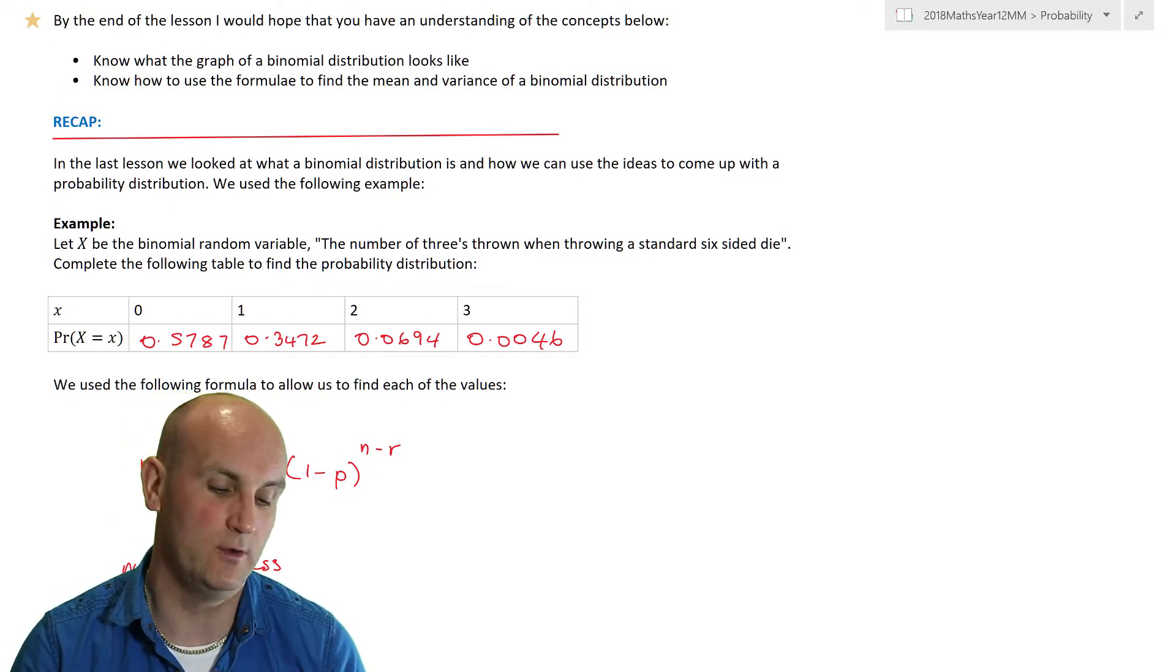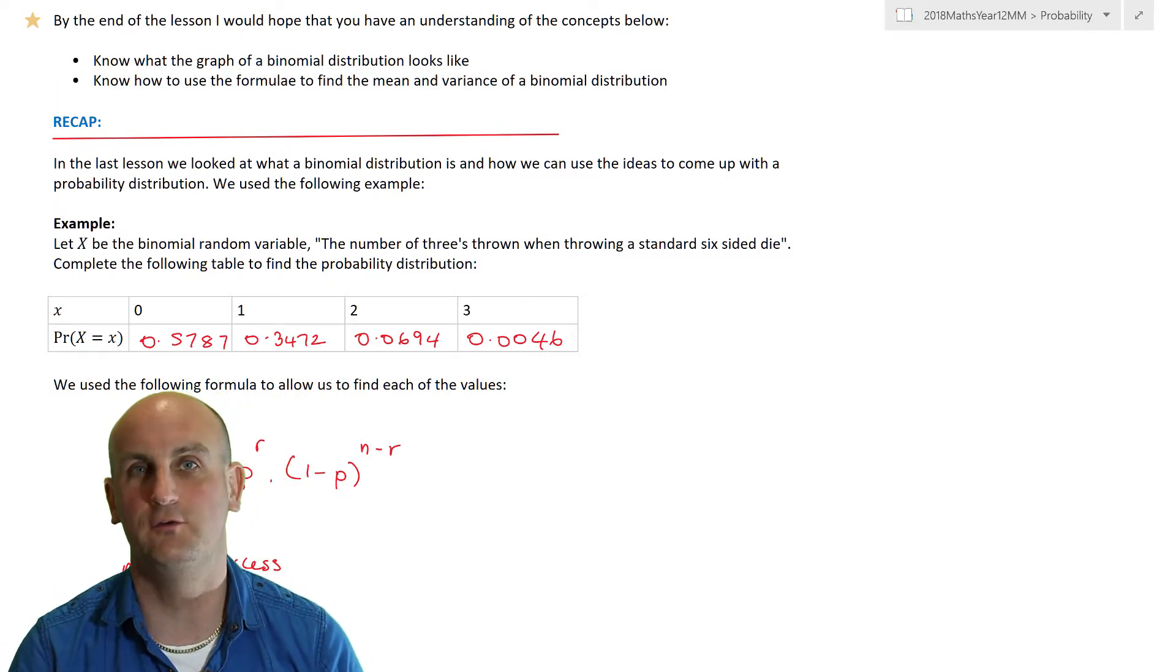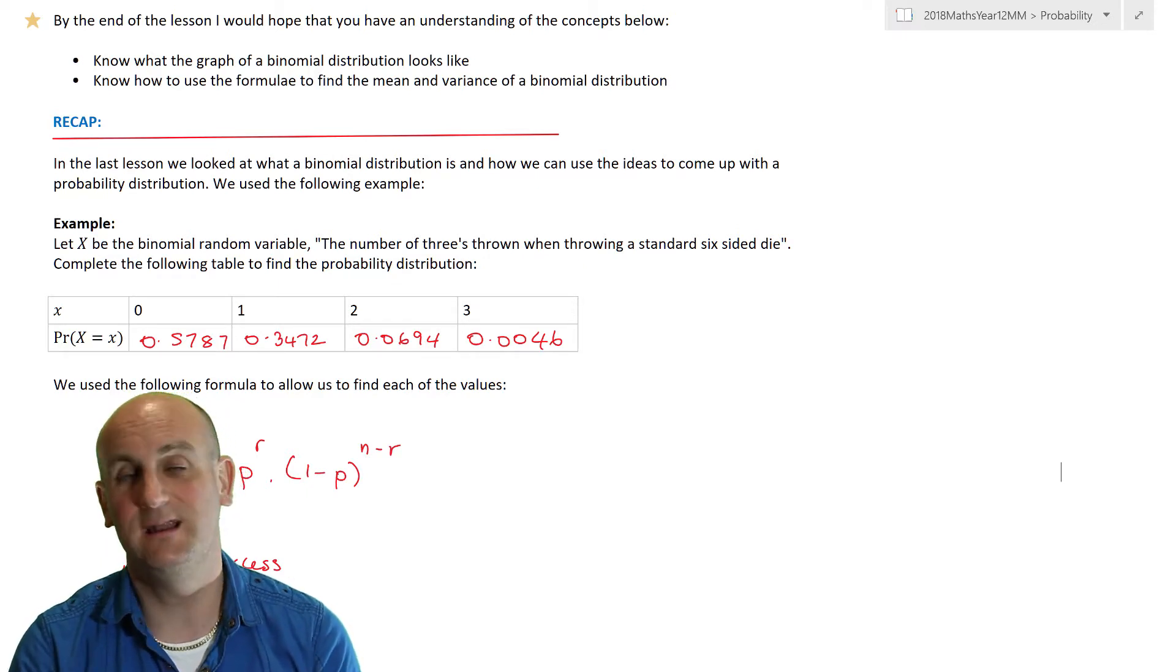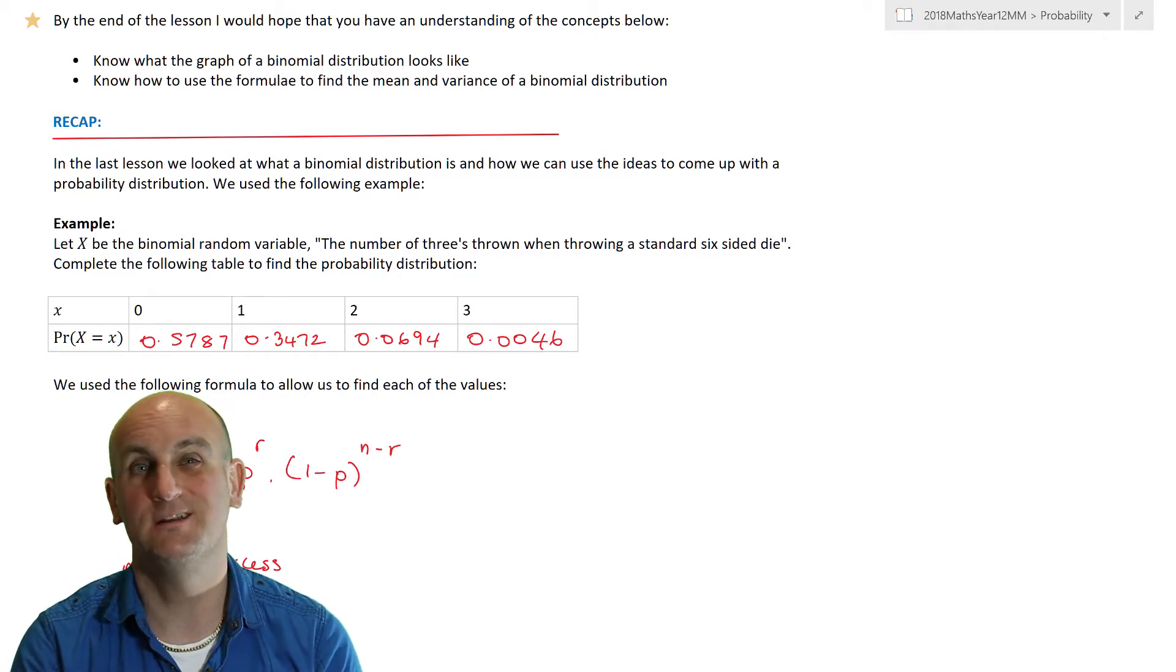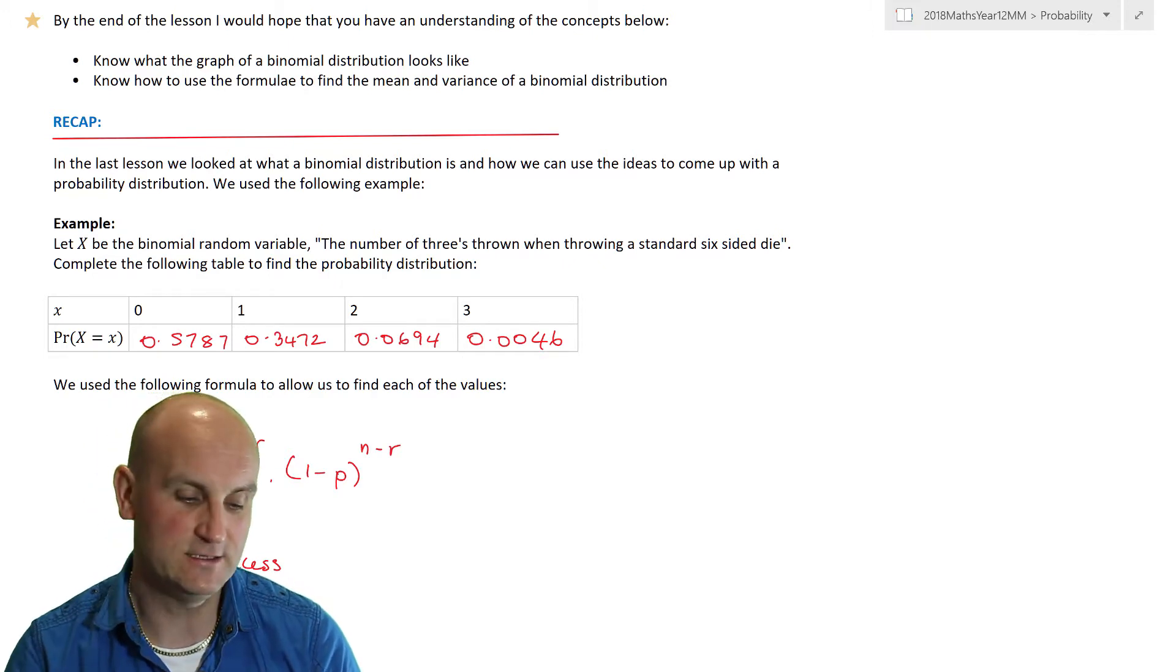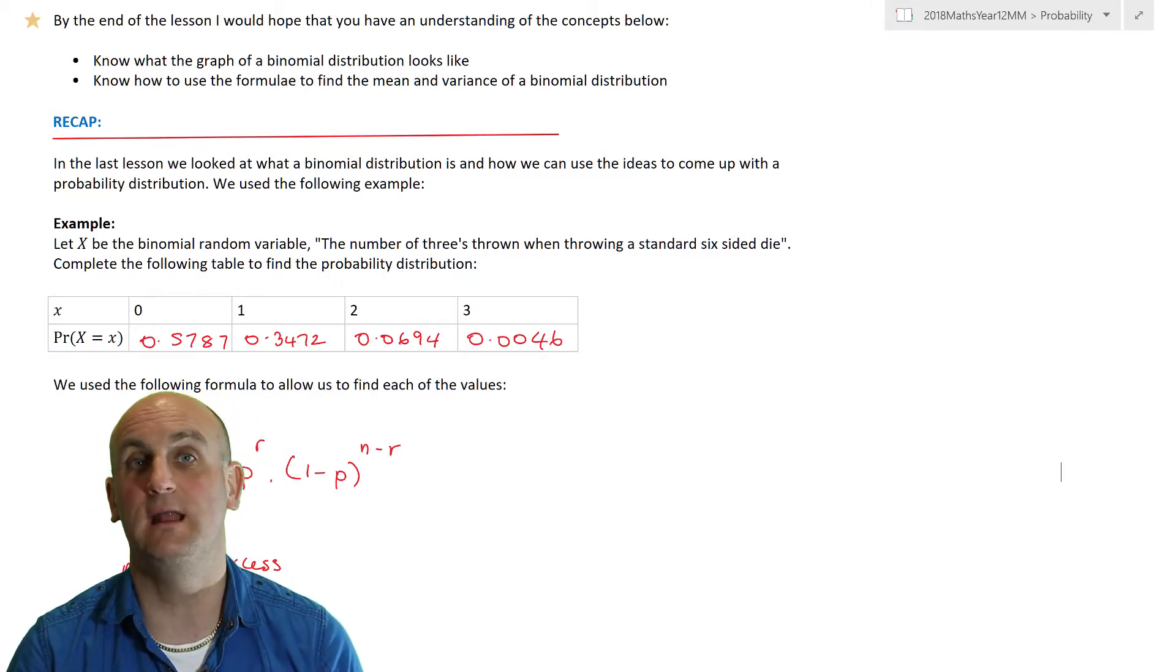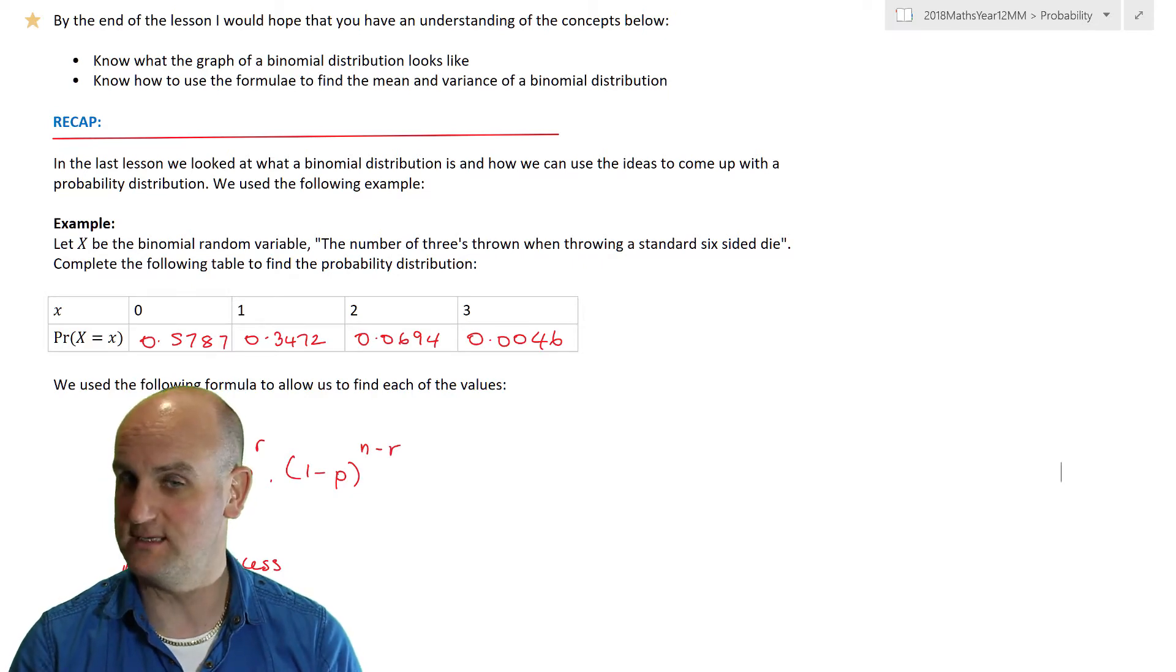By the end of this lesson, I want you to know what the graph of a binomial distribution looks like and possibly be able to plot one yourself. Now in an exam, particularly here in Australia, the chances of you being asked to draw these things are probably slim to zero. But knowing the general shape will be useful both now and later on. And then there are formulas for the mean and the variance of the binomial distribution.